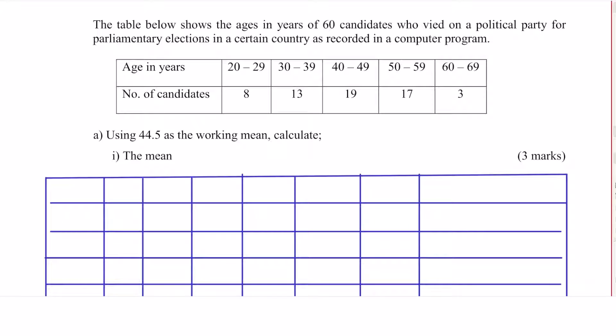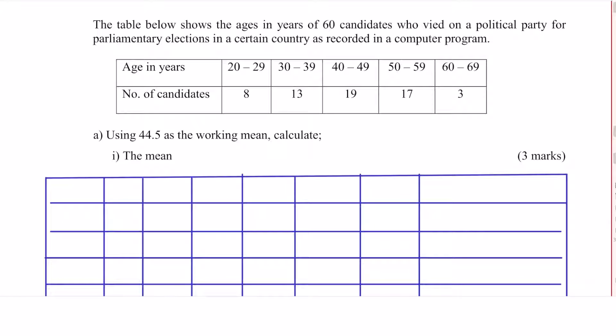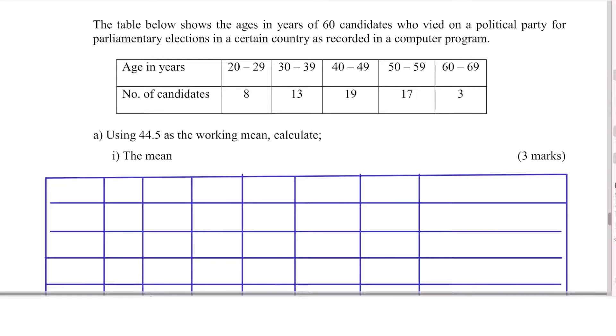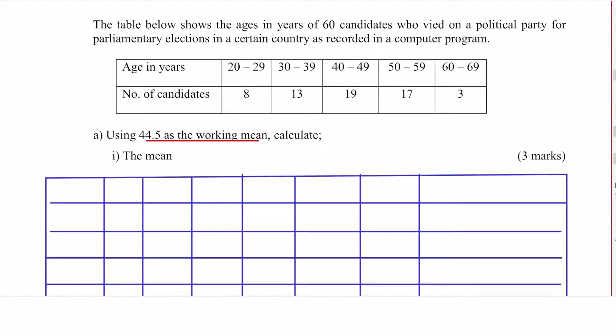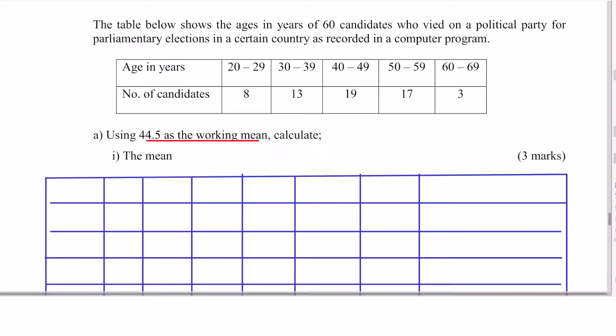So the table is there. Using 44.5 as the working mean, calculate: 1, the mean — this is the actual mean. So how do you get the actual mean given the working mean, also referred to as the assumed mean? We need to start from there, and there is a formula for that.